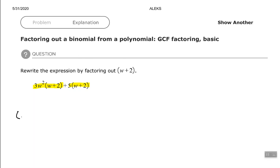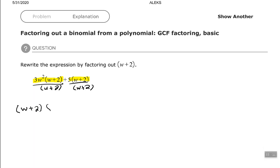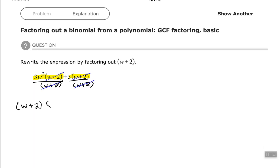I'm going to take the w plus 2, write it outside a set of parentheses, and then we're essentially dividing each one of these terms by w plus 2. This could be a mental step. If you choose, you don't have to write this out. But when I divide each one of those by w plus 2, then the w plus 2s will cancel out. And you see that I have 3w squared plus 5 left over. That's what would go in the other set of the parentheses.